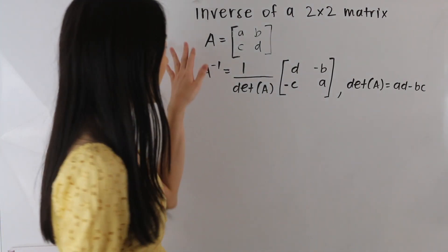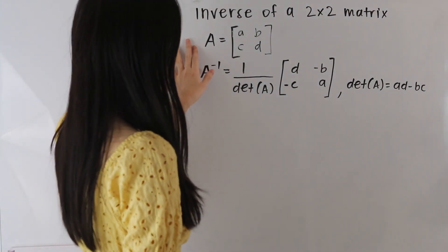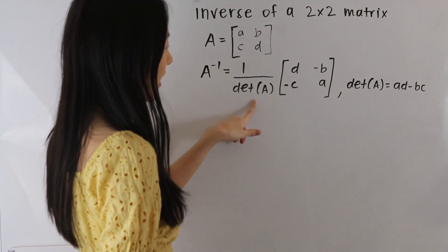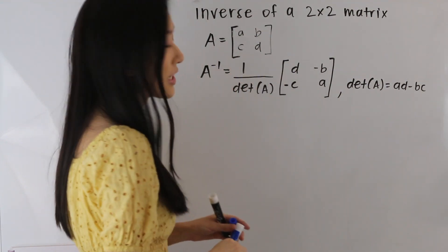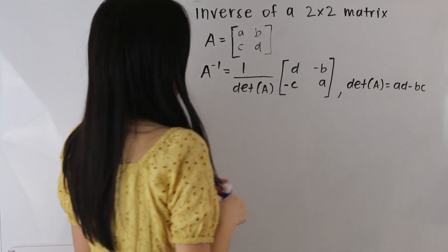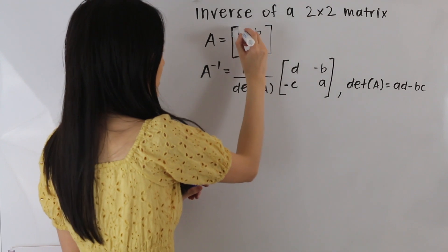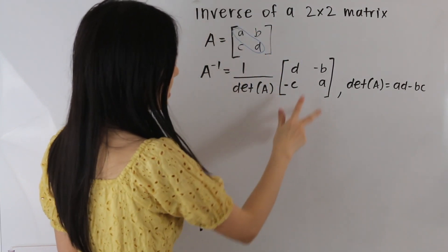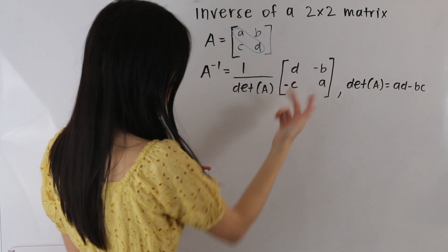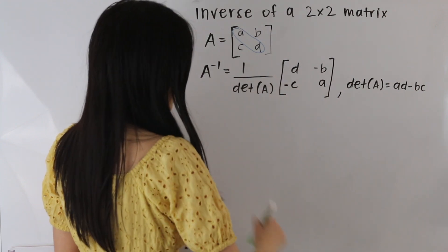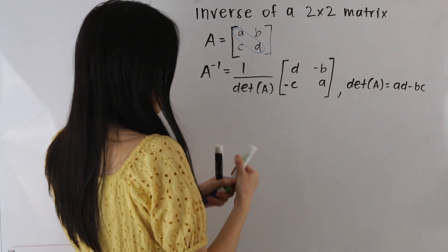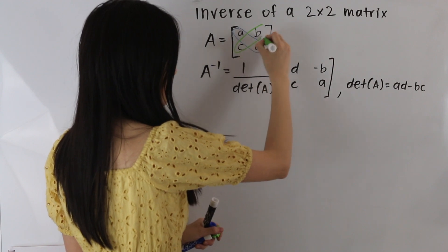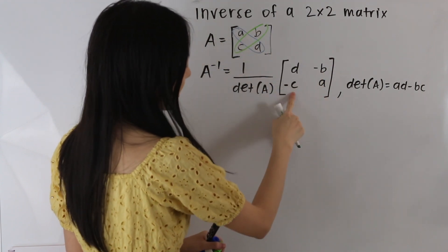So here we have a matrix A, and in order to find the inverse, what we need to do is take 1 over the determinant of A. Notice that this matrix here is this matrix here, so this diagonal here — these elements are reversed, and then the elements on this diagonal here are multiplied by negative 1, as we see here.